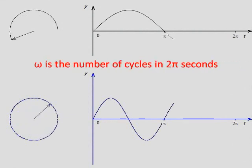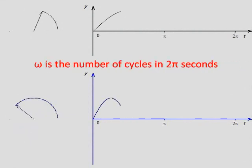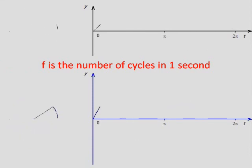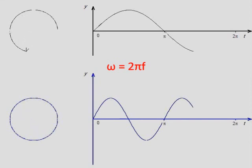Since the angular velocity omega is the number of cycles in 2 pi seconds, while the frequency f is the number of cycles in 1 second, we may conclude that omega equals 2 pi f.